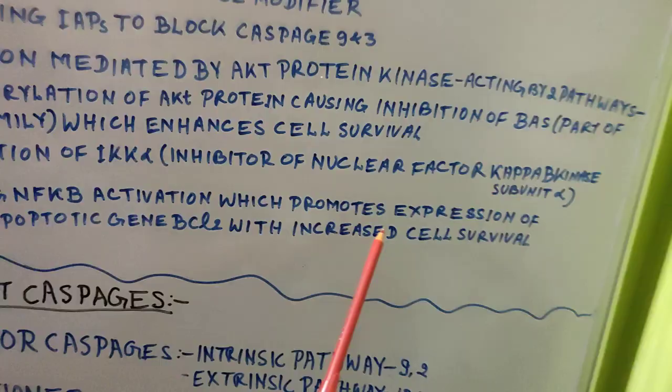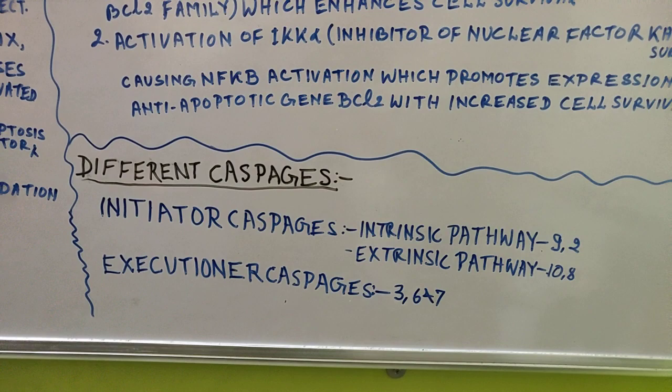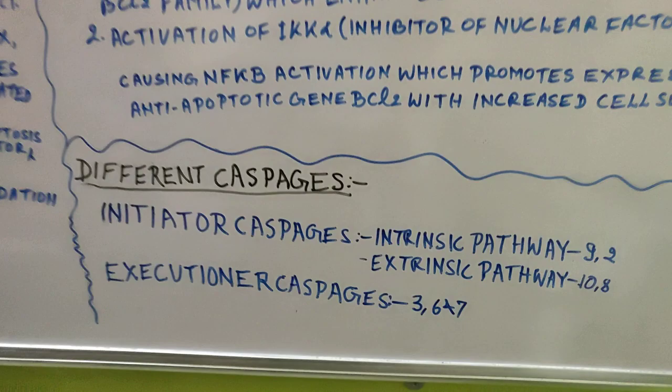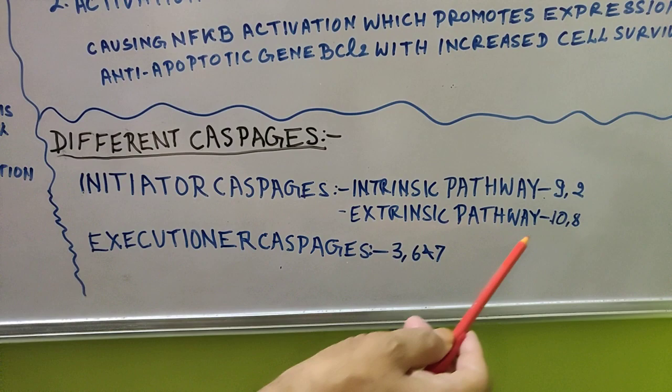Finally, regarding caspase subtypes: the initiator caspases of the intrinsic pathway are 9 and 2, while those of the extrinsic pathway are 10 and 8. The executioner caspases are 3, 6, and 7. That covers this additional lecture on apoptosis.